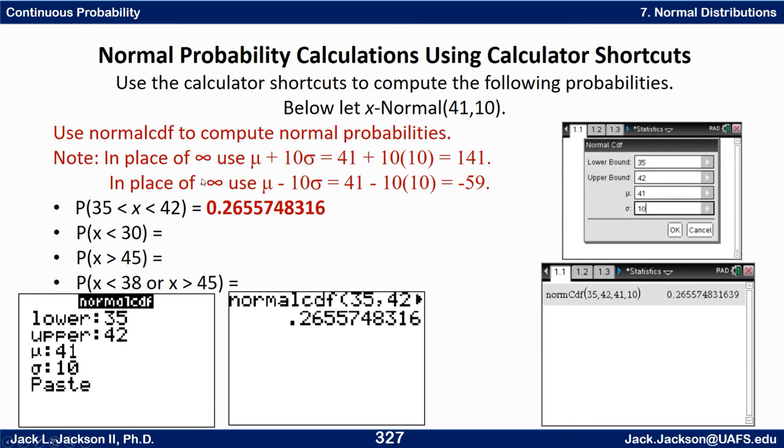Remember I said if we need to use infinity or minus infinity we can actually use that on the Inspire, at least the CAS version, but on the TI-84 what we're going to need to do is put some number out there that's going to be small enough for negative infinity and large enough for infinity. What will always work is mu plus 10 sigma for infinity and mu minus 10 sigma for negative infinity. Other numbers may work just as well but those will always work.